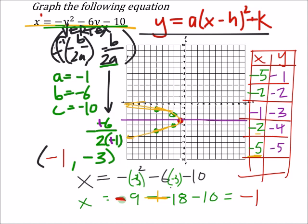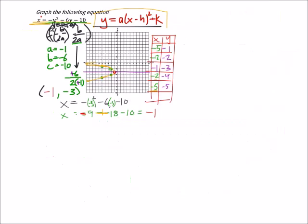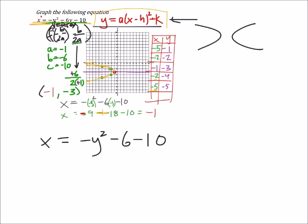Let me go back to the vertex form. If y equals some expression, we want x equals that form too. My objective is to rewrite this as x equals a times (y minus h) squared plus k — that will tell me quickly what the vertex is and which way it opens. Since this parabola is inverted, it either opens to the right or opens to the left.